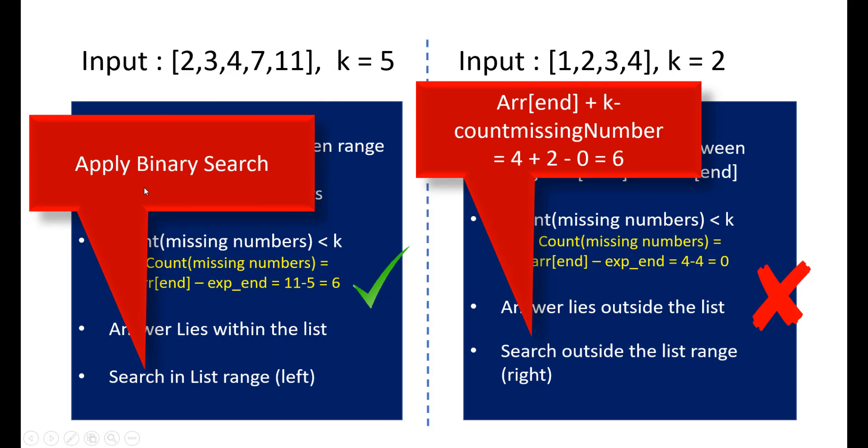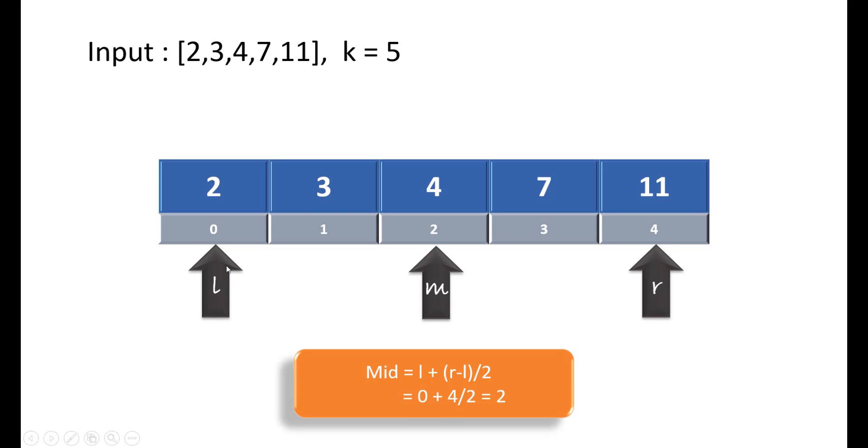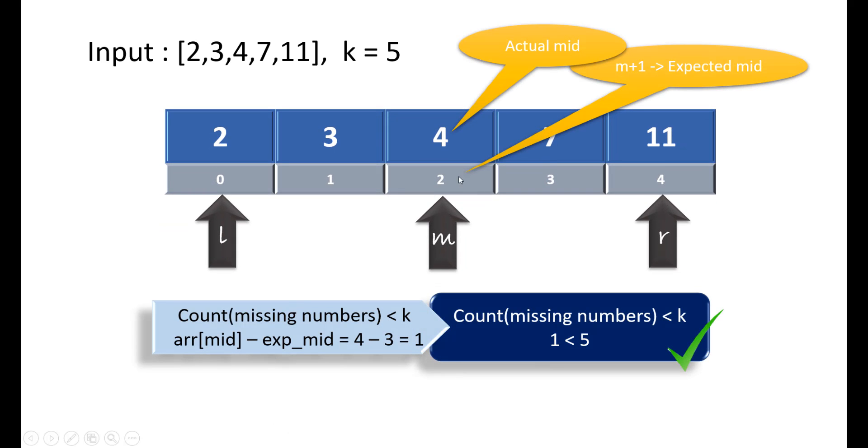In this first example, we can apply a binary search to find where this number is. Let's take this first example and try to apply the binary search. We'll place our left at 0, right would be the last index, and mid comes out to be 2 using the formula. When we see the missing element till this mid, we can say that only one number is missing because the number present at this index is 4 and the expected number that should have been here was 3, which is the index plus 1.